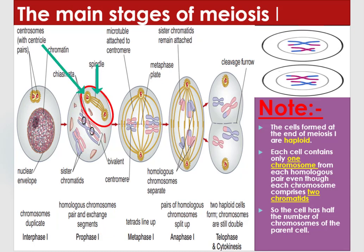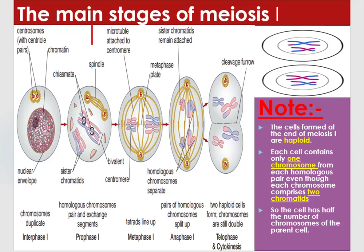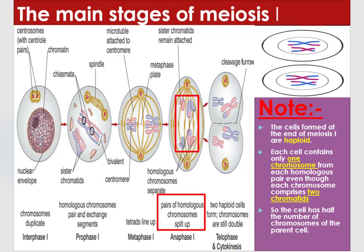During prophase 1, centrosomes — that is, pairs of centrioles — move to opposite poles and spindle fibers appear. During metaphase 1, tetrads or bivalents line up at the metaphase plate or equator and microtubules attach to the centromere of chromatids. During anaphase 1, pairs of homologous chromosomes split up and separate to opposite poles due to contraction and shortening of spindle fibers. In this case, sister chromatids remain attached.